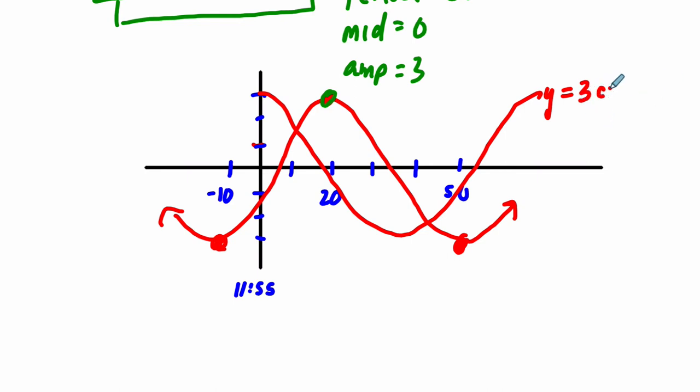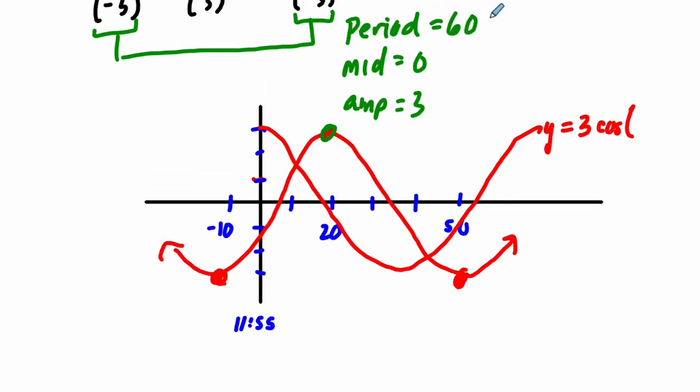Well, the next number we often refer to as B, so call it B. B equals 2π over the period. So 2π over 60 in this case, which is just π over 30. So this is going to be the B value, which is typically written as 2π over the period.